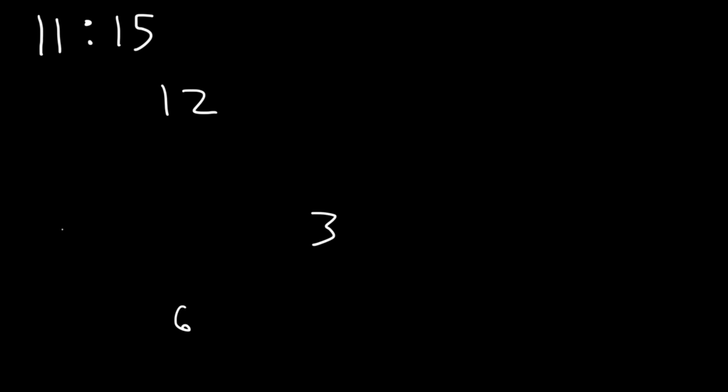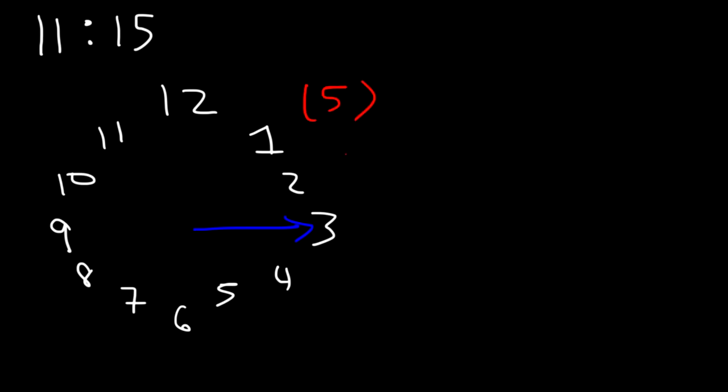Now let's always begin with a picture. So this is 12, 3, 6, and 9. The minute hand is at 3 because it represents 15. 3 is for 15, 6 is 30, 9 is 45, 12 is 0. So every increment of 5 is for each number. For example, if it was 11:05, the minute hand will be at 1. 11:10, it will be at 2. 15 is for 3. 20 is for 4. 25 is for 5. 30 is for 6.